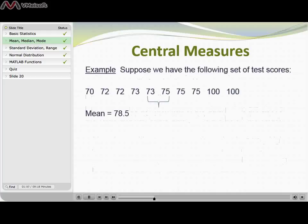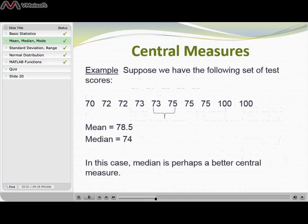So to determine the median, I'd simply average those two test scores together and the average of those two test scores would be 74. So my median is 74.